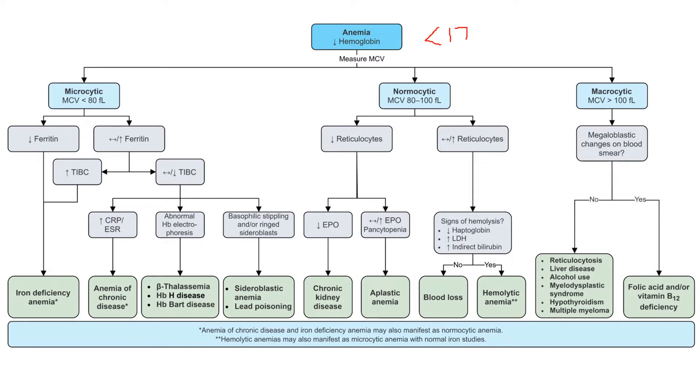Next thing is, we have a low hemoglobin, less than 12. What's the first number I'm looking at? It's the MCV. That's going to classify our anemia into one of three categories: microcytic, normocytic, or macrocytic.